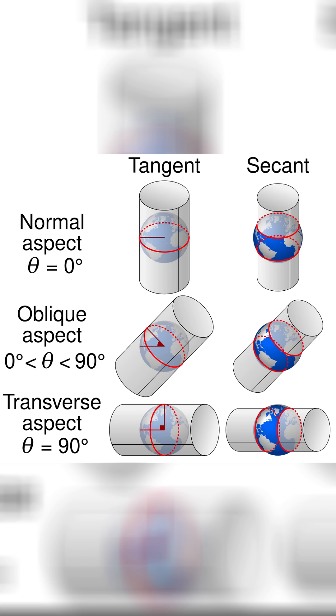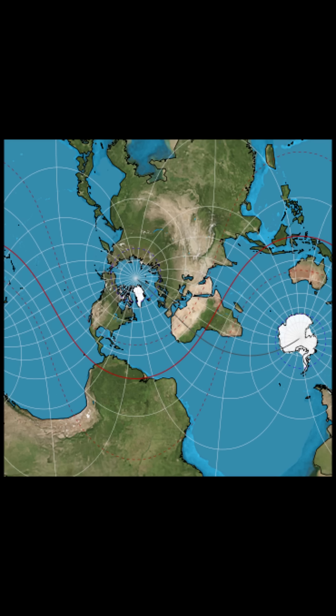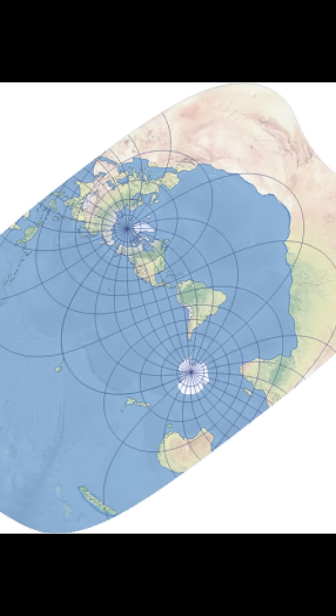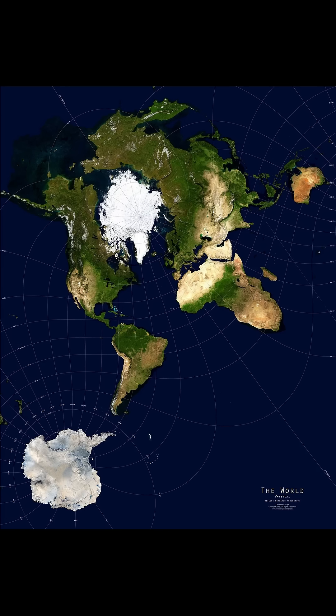This can create multiple different versions of the oblique mercator, such as this one which makes South America the dominant force at the bottom of our world, this one which uncomfortably stretches Africa out, and this one which is probably the best out of the ones we've seen, but still it looks very weird.